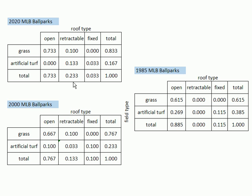The fixed roof: back in '85 there was 11.5 percent, down to 10 percent, now down to 3 percent—that's just one ballpark left with a fixed roof. Kind of interesting stuff. Also notice the grass: